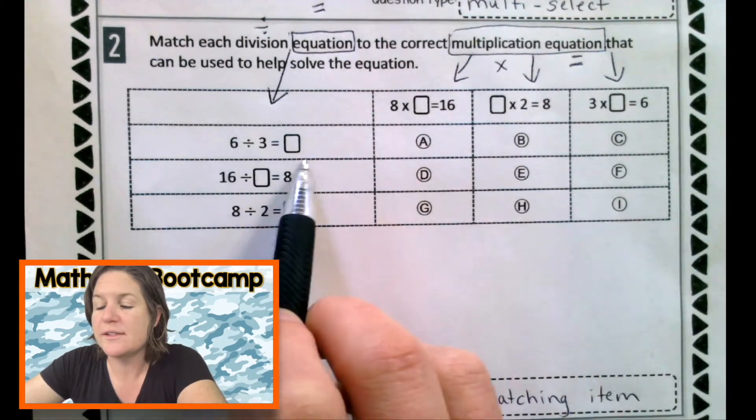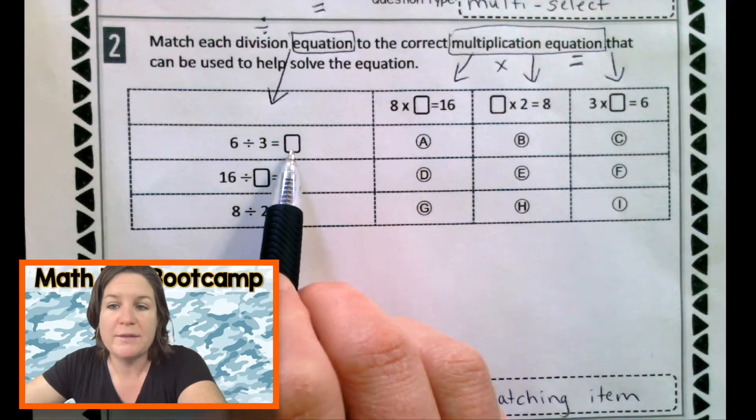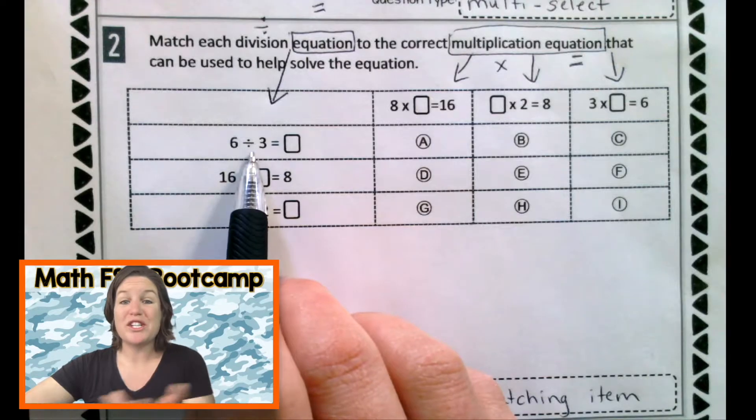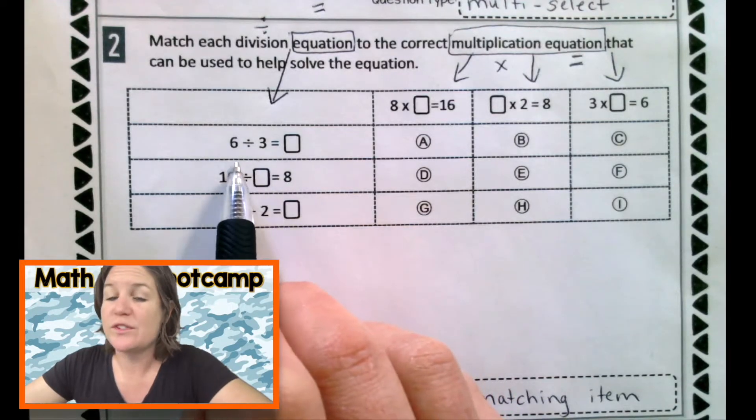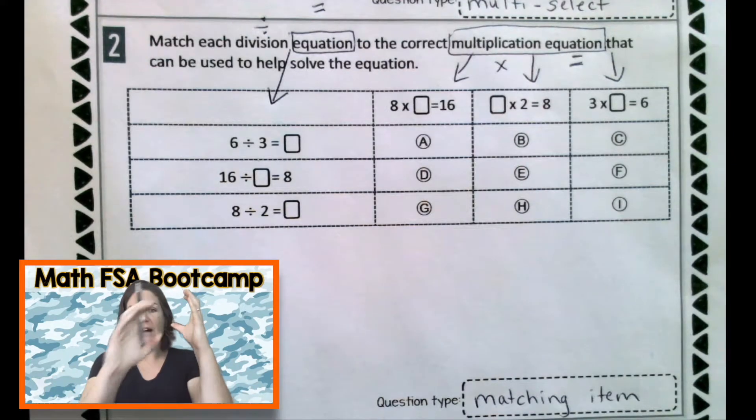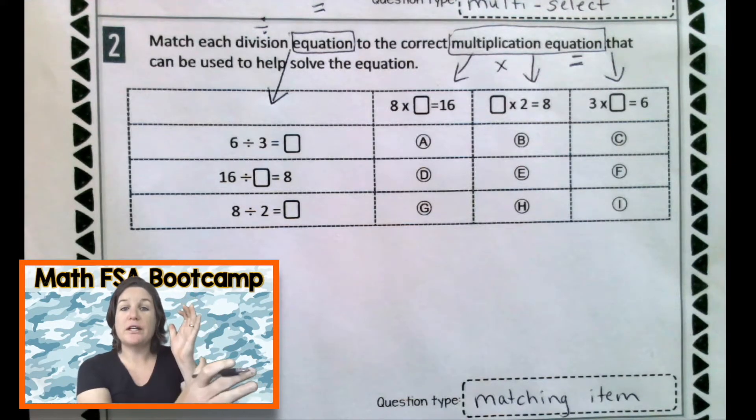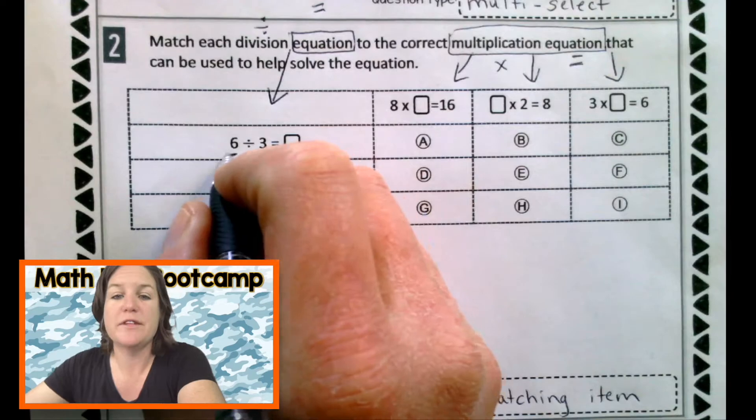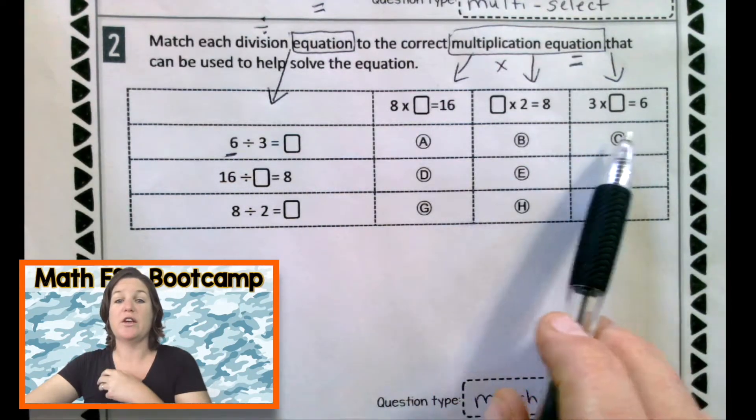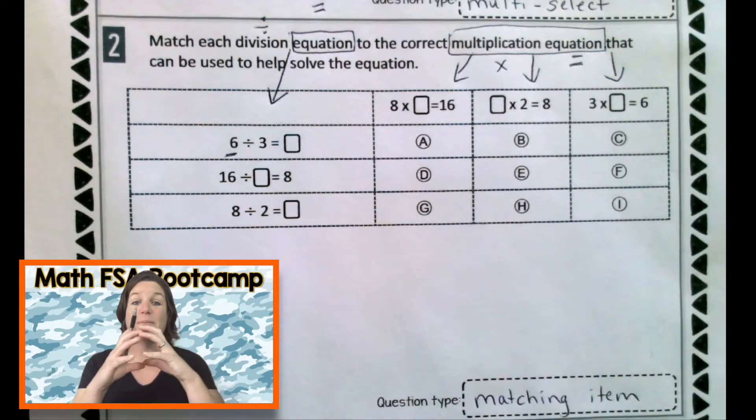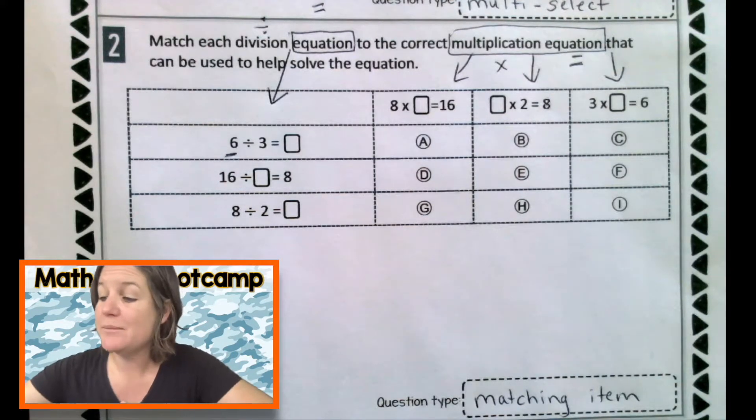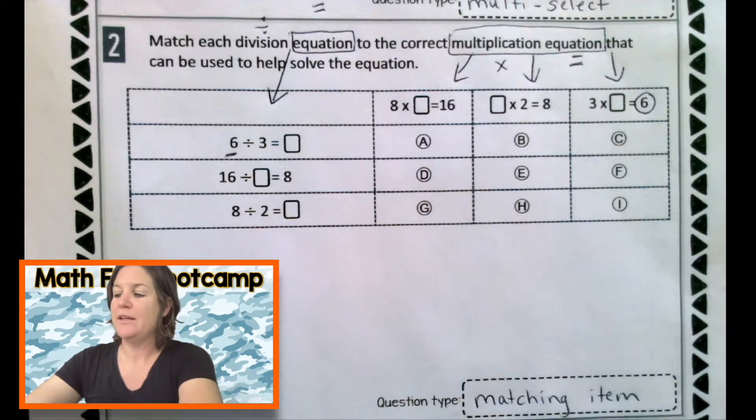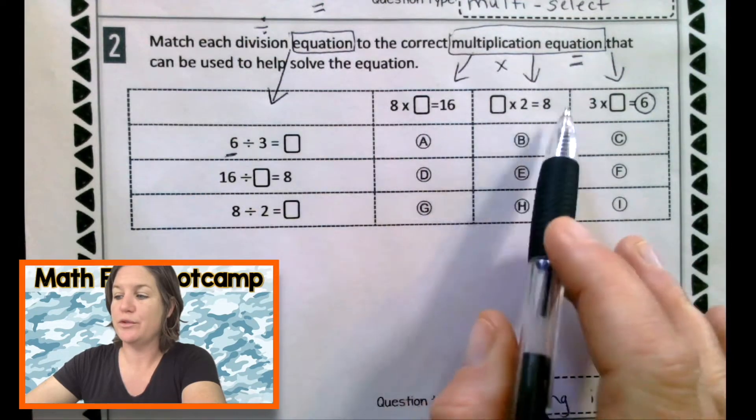So the first row says six divided by three equals what? Well, for this, we actually don't even have to figure out what the missing value is. We just have to figure out which equation is in the same fact family. So six, that means six total divided into either three groups or three in each group equals how many? Okay, so if six is the total here for division, if we're matching it with a multiplication equation, then six needs to be our product, our answer. And I'm seeing right here that six is the product right there. So let's go ahead and draw this one out just so we can prove this.